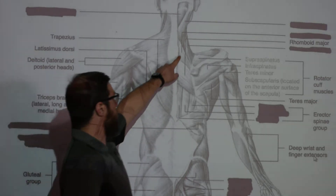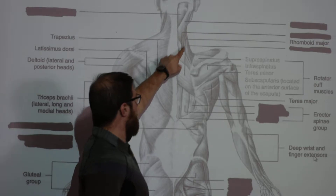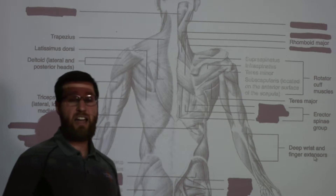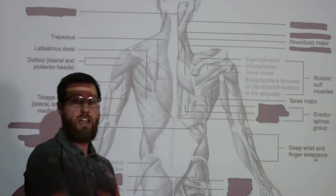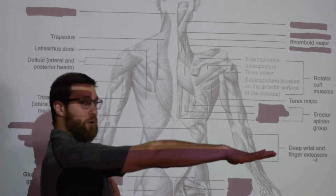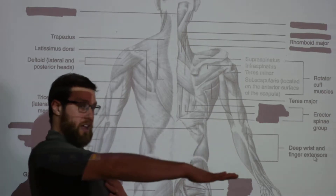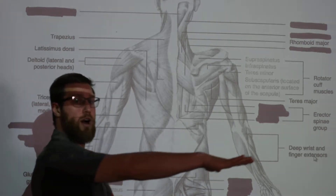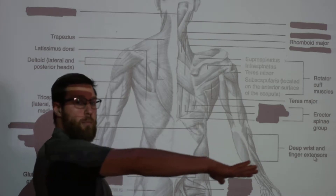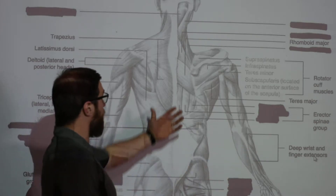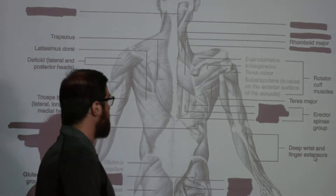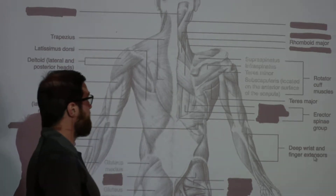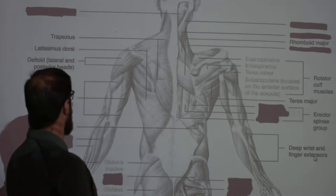The rhomboids are a unique one. You've got your rhomboid minor — don't worry about that — and your rhomboid major. It's a major back retractor. If you put your arm out straight and pull your elbow straight back, that would be pure rhomboid movement. The rhomboid major is deep — it would be hidden under your trapezius.